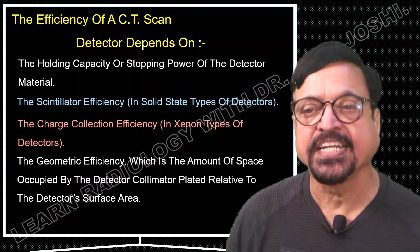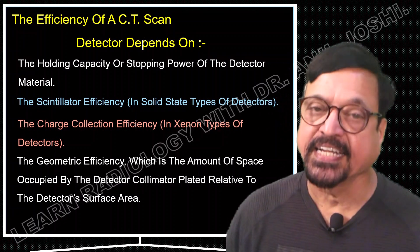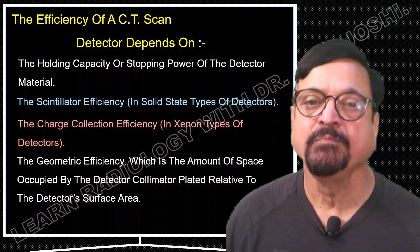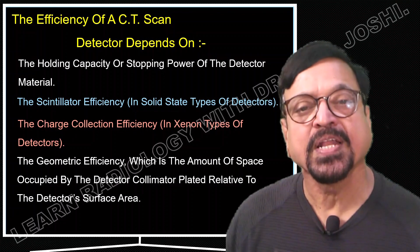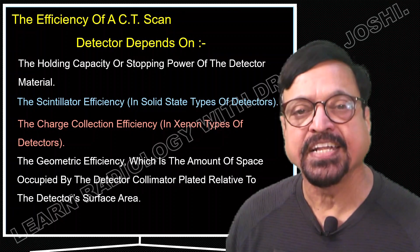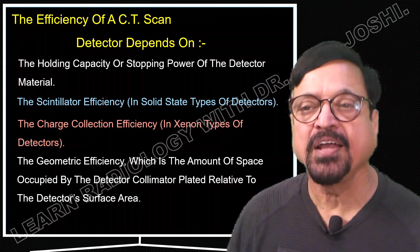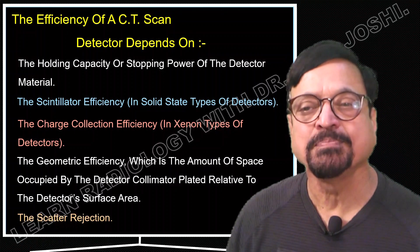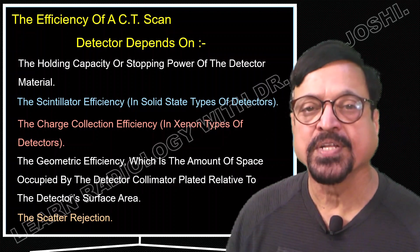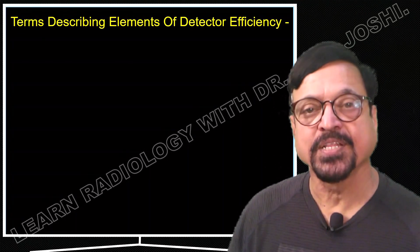Geometric efficiency refers to the amount of space occupied by the detectors and collimators relative to the detector surface area. If detectors are too large, we cannot fit more of them to achieve better resolution. Detectors should therefore occupy minimum possible space with minimum weight. There should be no scatter rejection — all X-rays arriving at the detector should be totally absorbed so that everything coming from the body is utilized for image formation.